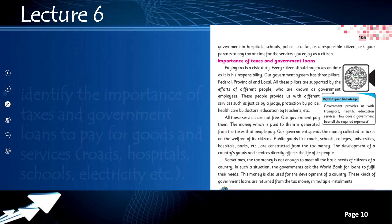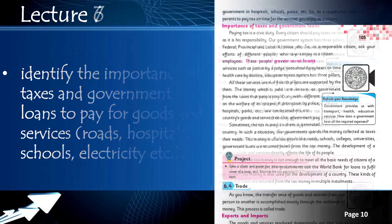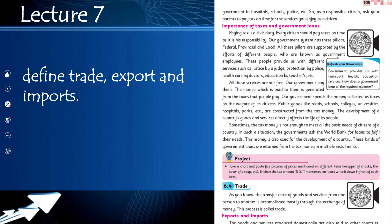Then we will move to lecture six, in which we will identify the importance of taxes and government loans to pay for goods and services — roads, hospitals, schools, electricity, etc. Students will learn what tax is, why the government collects it, and how loans are given. These are very important for economics and for the development of the country, and we will discuss this in lecture six.